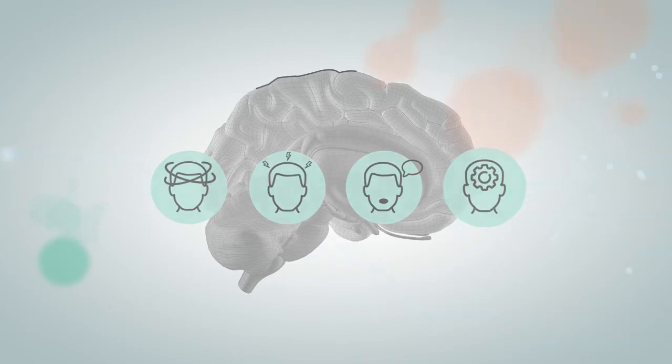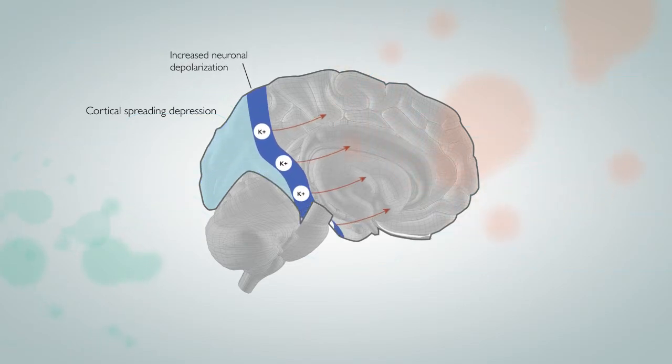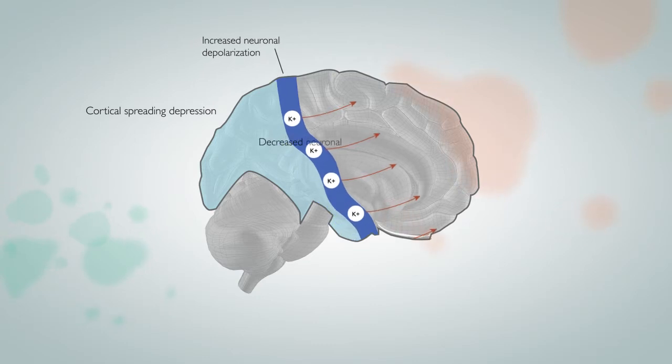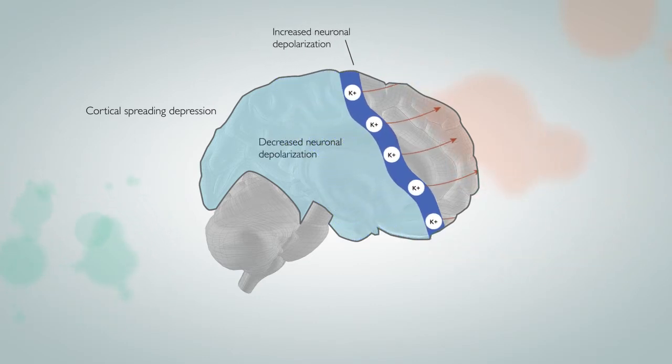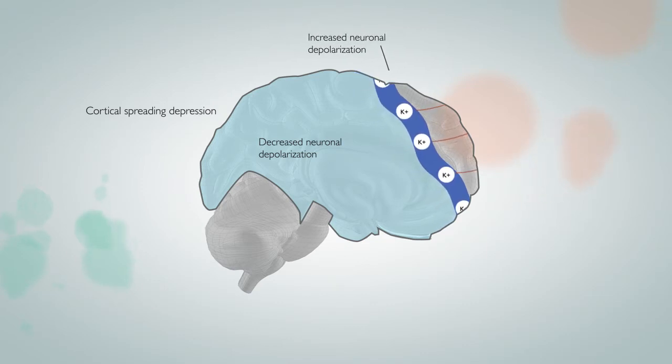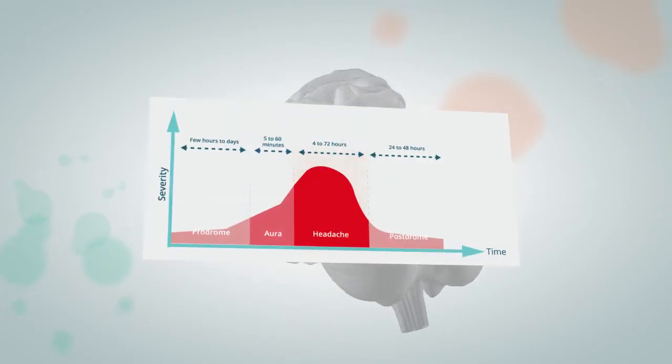Studies suggest that aura is caused by cortical spreading depression, a slowly propagating wave of depolarization, followed by hyperpolarization in cortical neurons and glia. It is initiated by local elevations in extracellular potassium that chronically depolarize neurons.